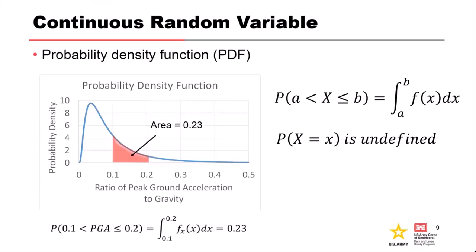The second type is continuous random variables. For continuous random variables, we portray them as a probability density function, or PDF. This differs from the probability mass function for discrete variables — for continuous random variables, the PDF only gives us a probability density, not an actual probability. To get an actual probability, we need to look at a range of values.